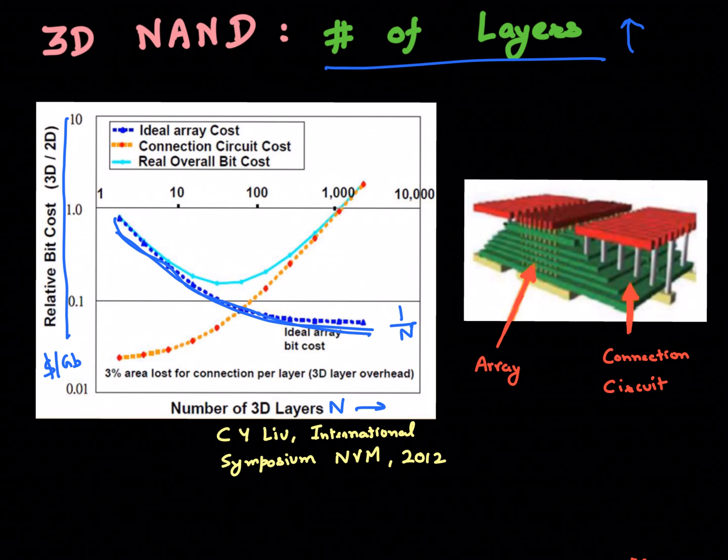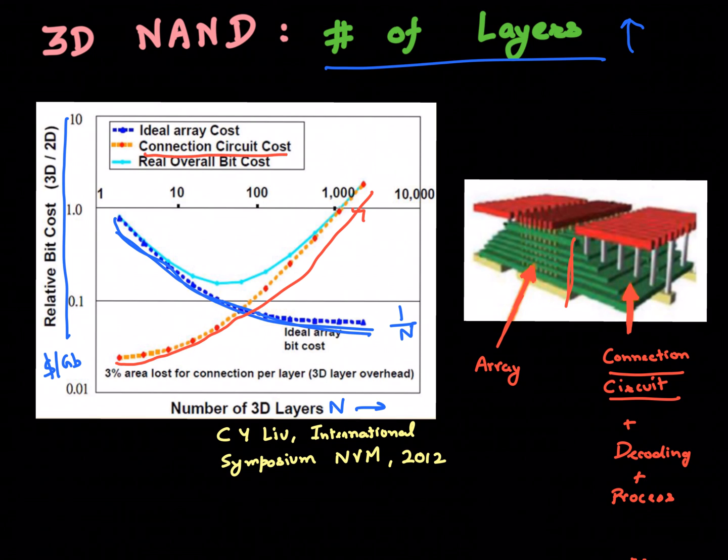But now, in this non-ideal world that we talked about, you have this connection circuit which is meant for the staircase, the decoders, and also you have this increasing process cost with each additional layer. If you take all those things into account, the cost is actually going up.